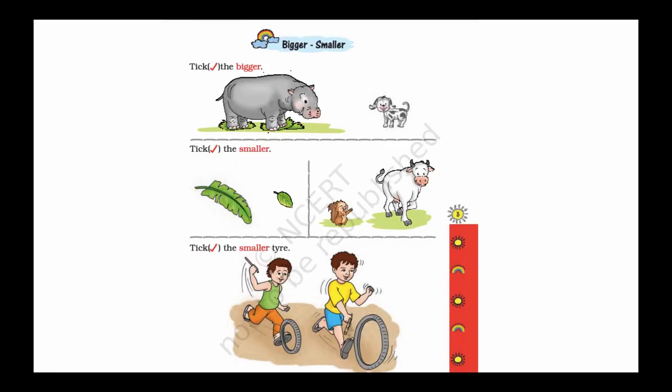Now let us do this exercise from NCRT on bigger and smaller. The first question is: take the bigger. We have two animals — one is a hippopotamus and the second one is a small puppy. We have to choose which one is bigger. This hippopotamus is bigger than the small puppy.